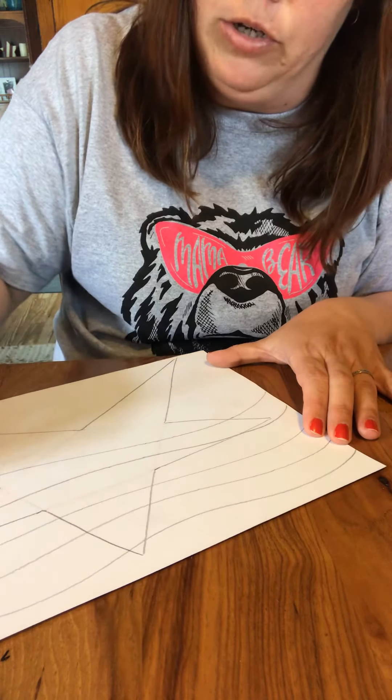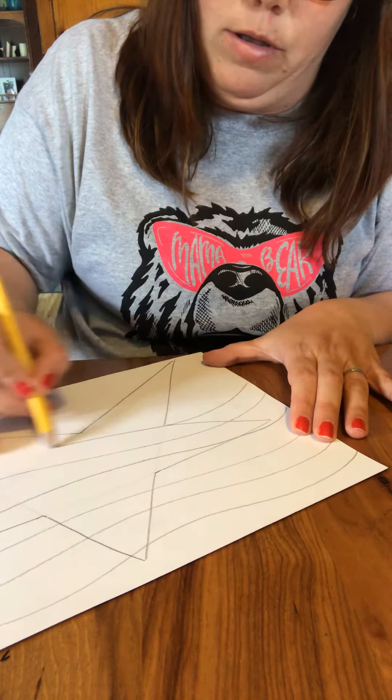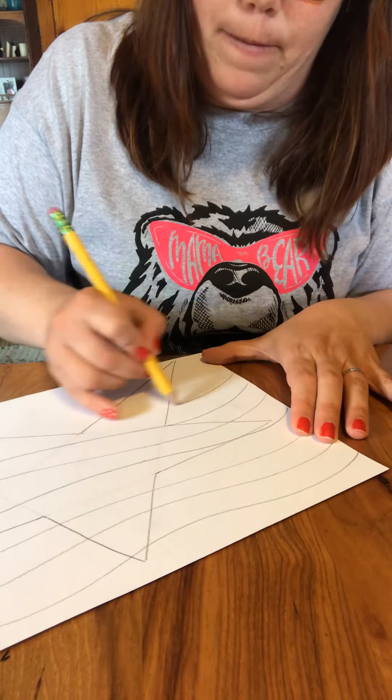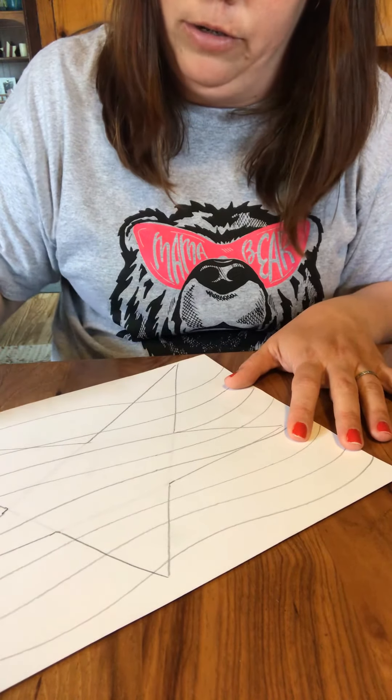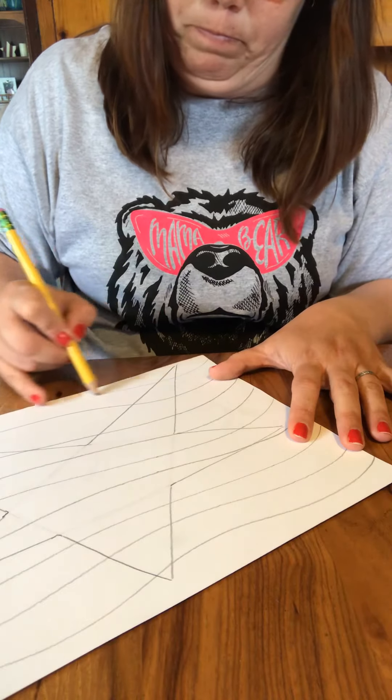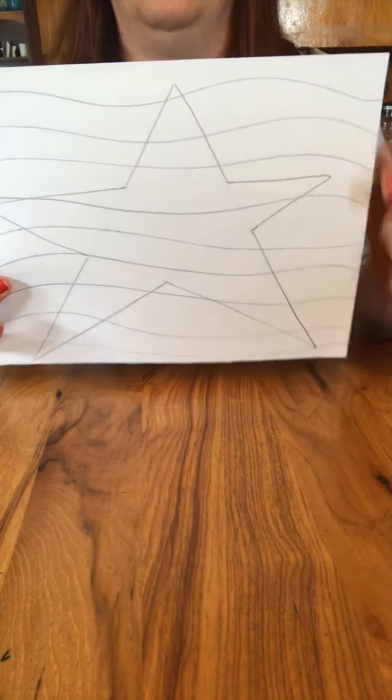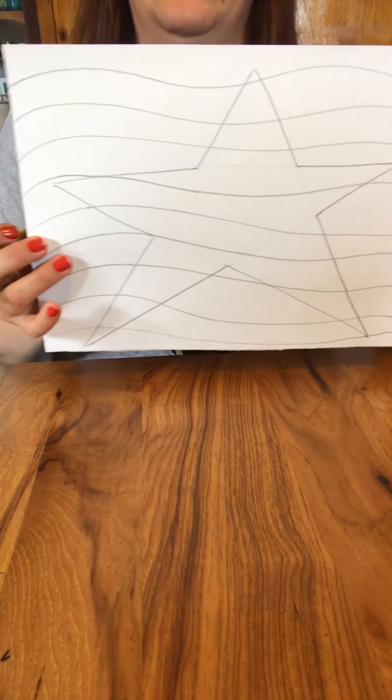And you go right on top of the star. Curved is easier than drawing straight lines because then you don't have to worry about them being perfectly straight. So you go top to bottom wavy lines all the way across.